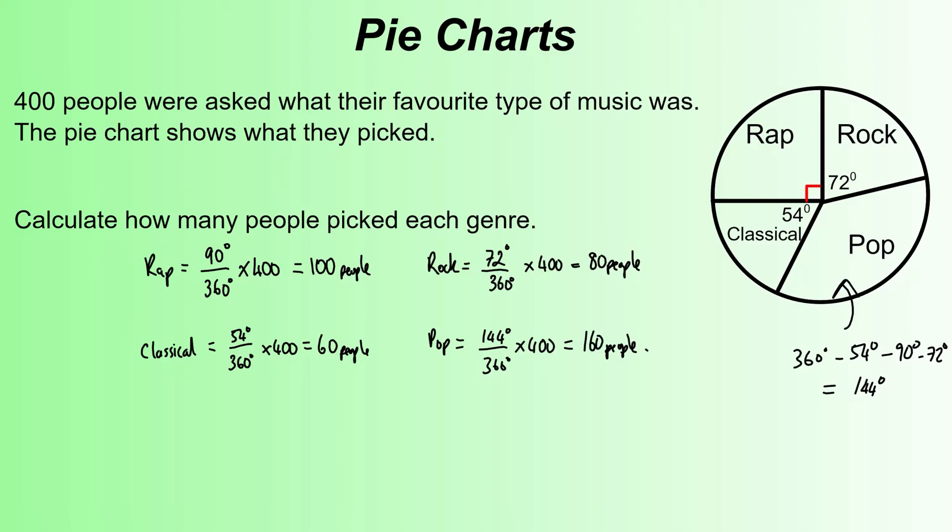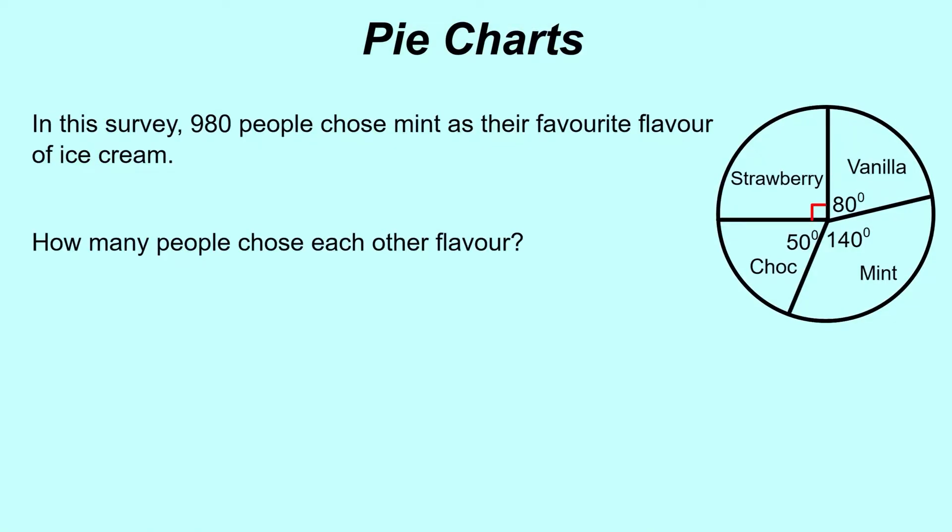Let's have a look at another example. This one is working along a very similar idea, but this time it's a survey and 980 people chose mint. What it's saying this time is that 980 doesn't represent the full pie chart. 980 just represents one section of the pie chart, and how can we scale that down and back up to find out how many people picked each of the other sections.